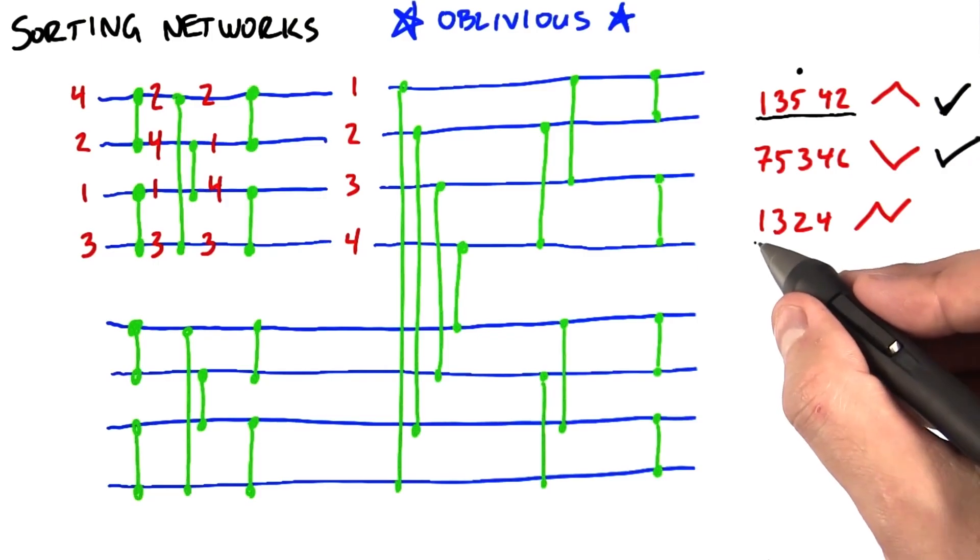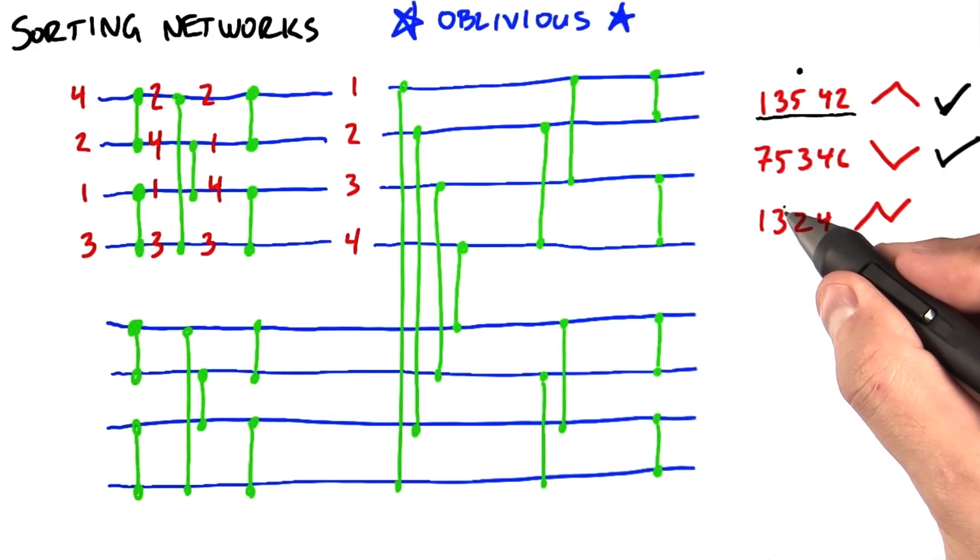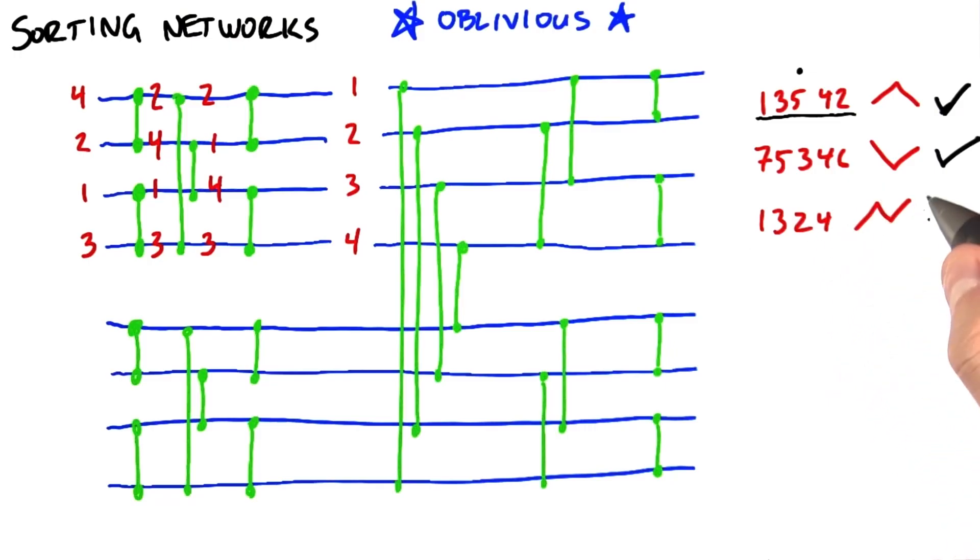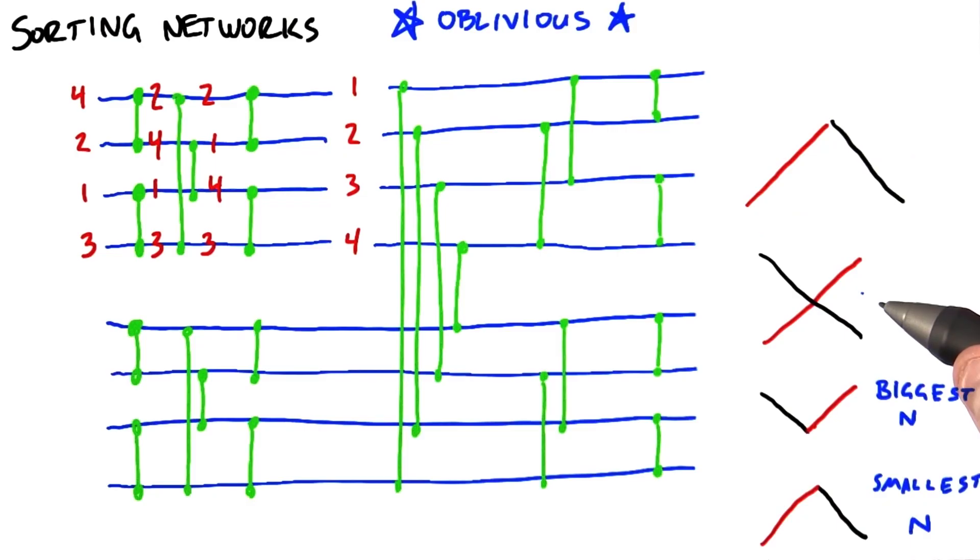But we might have a sequence that looks like this, one, three, two, four, where we go up and then down and then up again. This, however, is not bitonic. Now, why do we care? It turns out that it's particularly easy to sort a bitonic sequence. And let me tell you how.